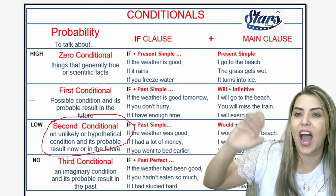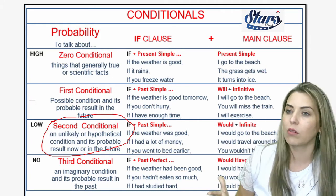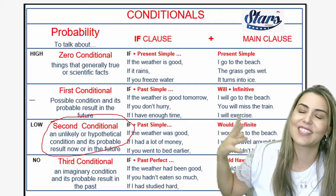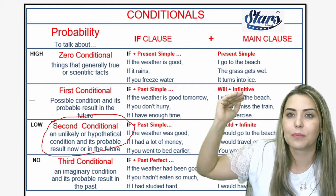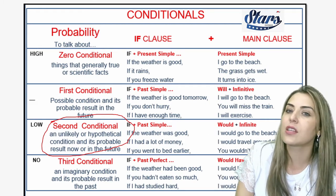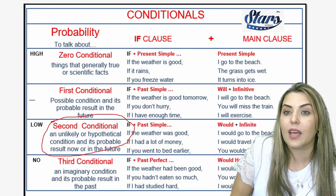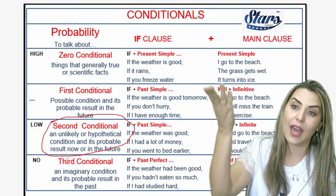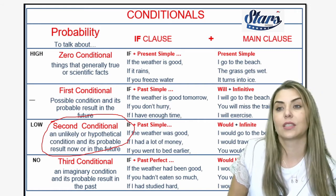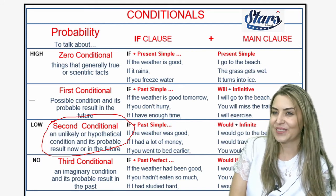The zero conditional has a very high probability. For example: if the weather is good, I go to the beach. What is the probability of that happening? Very high — especially because we are in Brazil, and in Brazil the sun shines every day. The first conditional is maybe — possible, and it probably results in the future. If the weather is good tomorrow, I will go to the beach. If it's not, I'm not.